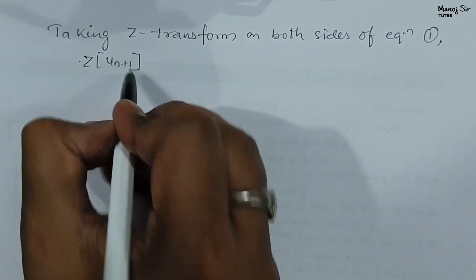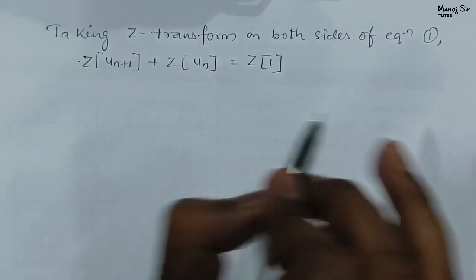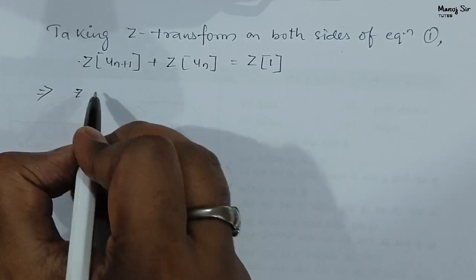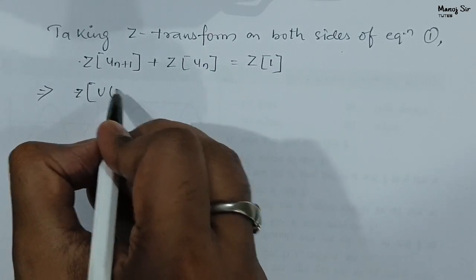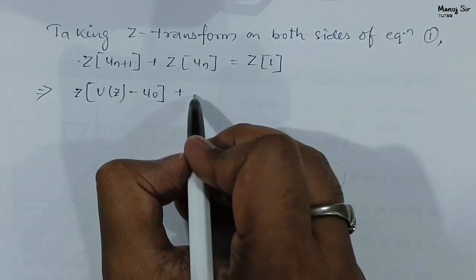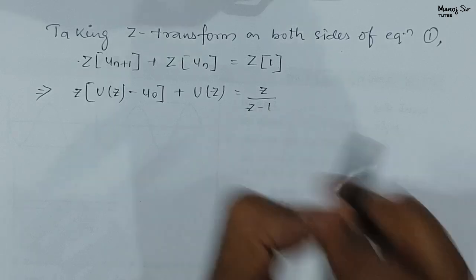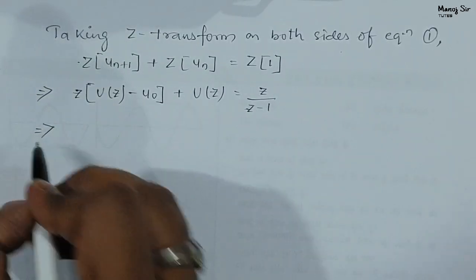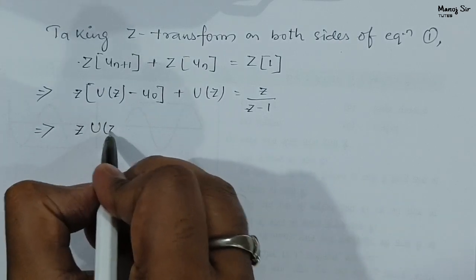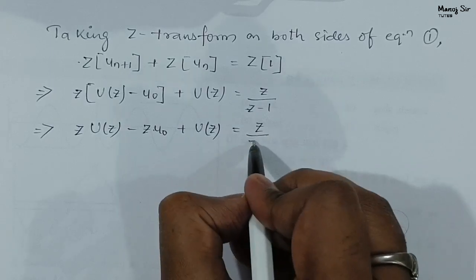Now, taking Z transform on both sides of equation 1: Z transform of UN+1 plus Z transform of UN equals Z transform of 1. This becomes Z·U(Z) − Z·U(0) + U(Z) = Z/(Z−1), using the shifting property for the first term and Z/(Z−1) for the right-hand side.